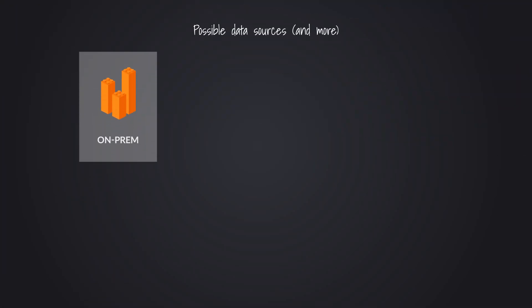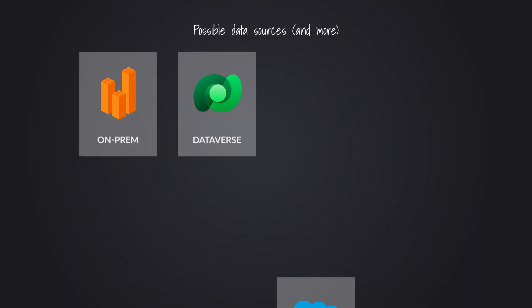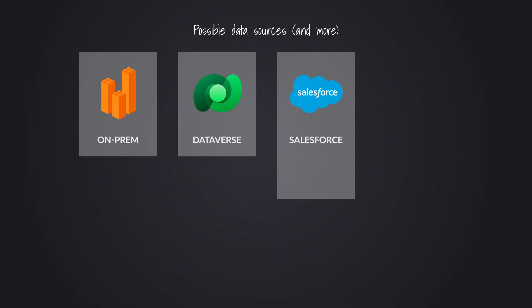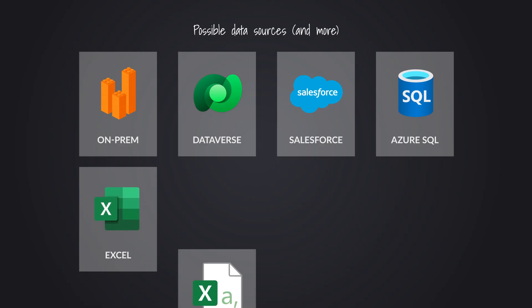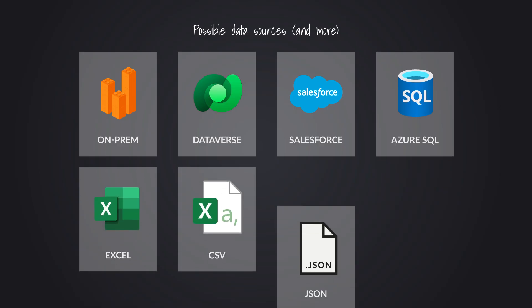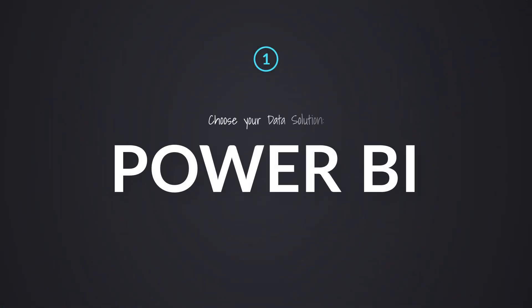Data sources could be from a relational database, a file system running on premises, a SaaS application like Dataverse or Salesforce, cloud databases like Azure SQL, or flat files like Excel, CSV, JSON, or Parquet. This is one of those key decisions you need to make ahead of time because that's going to decide which lane you're going down.